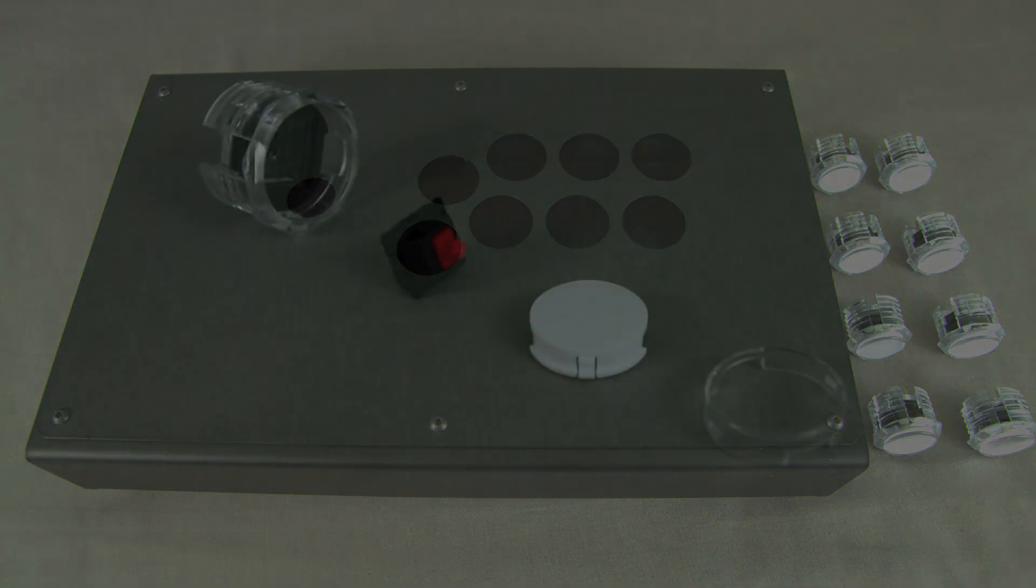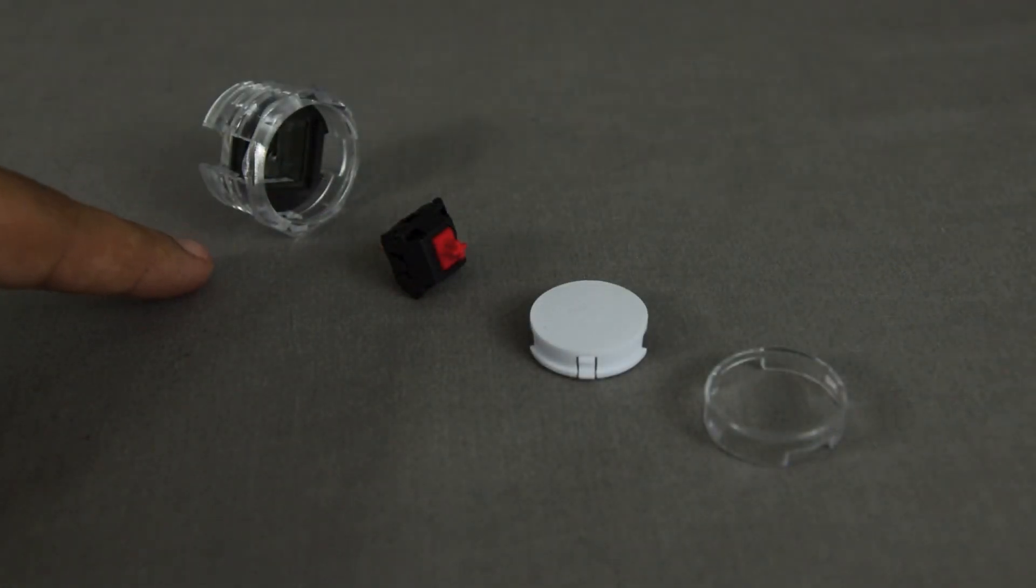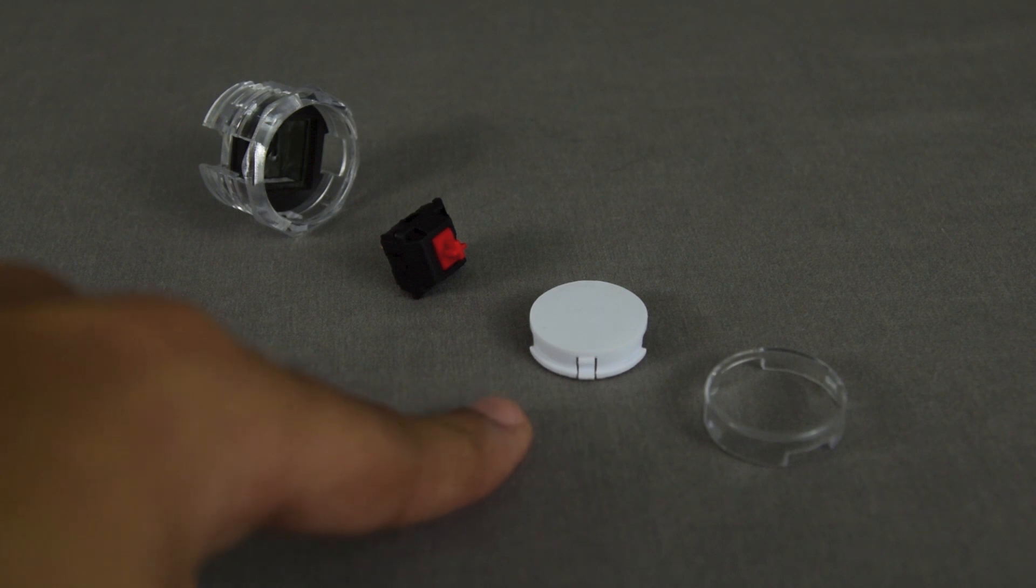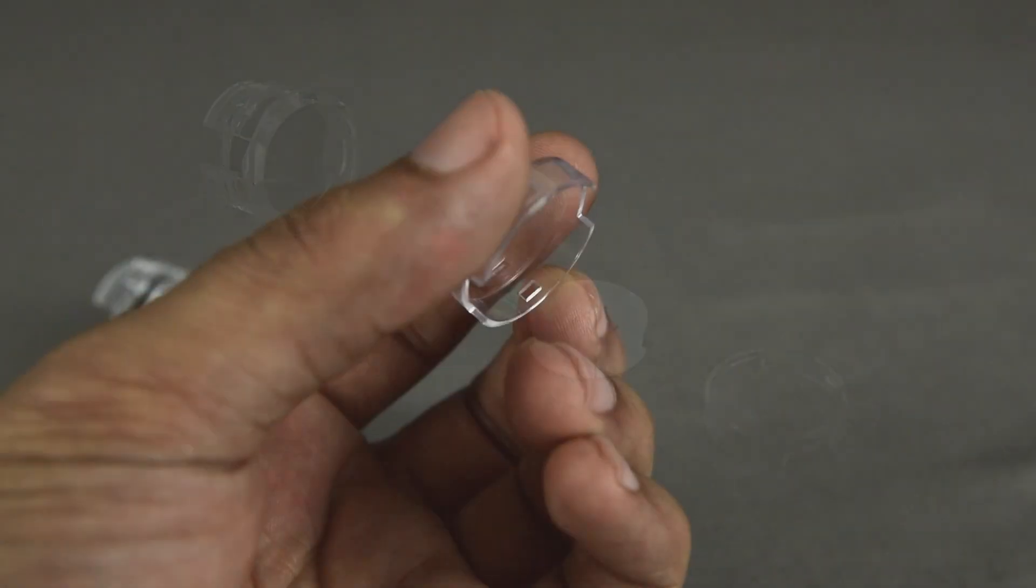Let's start by looking at the parts for a single push button. Seen here is a push button barrel, a Cherry MX red switch, an art cap, and then the push button plunger cap. All of these need to be assembled in a specific order, so just follow along and we'll get you situated.